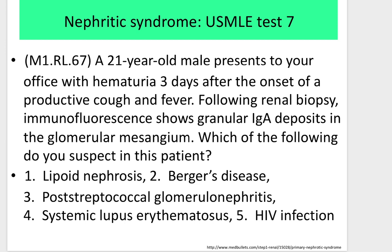Test 7: A 21-year-old male presents with hematuria three days after the onset of productive cough and fever. Following renal biopsy, immunofluorescence shows granular immunoglobulin A deposition in the glomerular mesangium. Which of the following do you suspect? (1) Lipoid nephrosis, (2) Berger's disease, (3) Post-streptococcal glomerulonephritis, (4) Systemic lupus erythematosus, (5) IgA nephropathy. Please read something from pathophysiology and nephrology to remind yourself — it will make answering these questions easier.